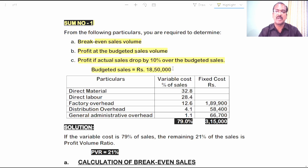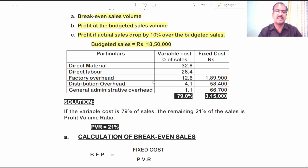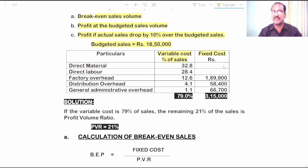The budgeted sales given in the problem is 18,50,000 rupees. We are also given with a few other details as per the table presented. In the second column, you find the details given as variable cost as percentage of sales, whereas the third column is titled with fixed cost in amount.